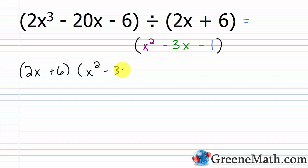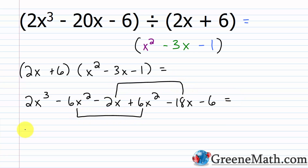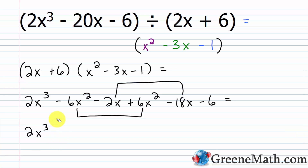Combining like terms: negative 6x squared plus 6x squared is 0x squared, so that cancels. Then negative 2x minus 18x is negative 20x. So the result is 2x cubed plus 0x squared minus 20x minus 6, which is 2x cubed minus 20x minus 6. That completely matches our original dividend, so we know we have the correct answer.